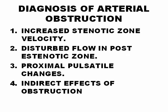To make the diagnosis of arterial obstruction — in other words, arterial stenosis — the first thing the doctor will look for is an increment in velocity in the stenotic zone. A velocity of more than 125 cm per second indicates some stenosis. The post-stenotic flow is turbulent, which is another form to make the diagnosis. There are also proximal pulsatile changes and indirect effects of the obstruction. The most important findings are numbers 1 and 2.